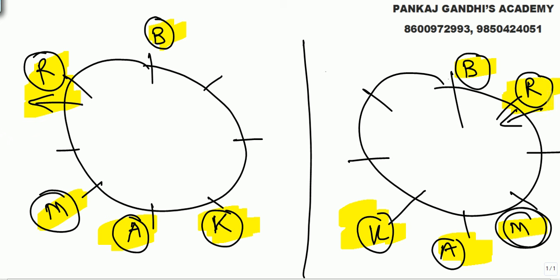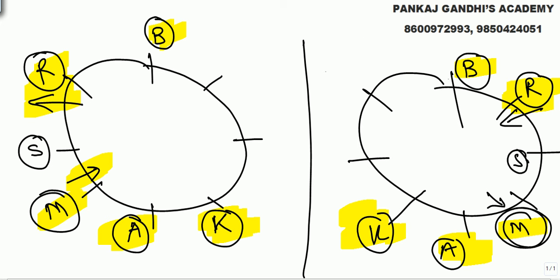Two cases chal rahe hain. Ye case mein Mahi yahan pe hai toh Mahi is second to the left of Rani — aa gaya. Aur yeh case mein bhi Mahi is second to the left of Rani confirmed. Aage dekho — Sanjay is immediate left of Mahi. Mahi agar yahan hai toh Sanjay ke liye jagah yahan bachegi. Sanjay is left of Mahi toh Mahi aise dekhega and Sanjay will be immediate left. Dono cases mein try chal raha hai.